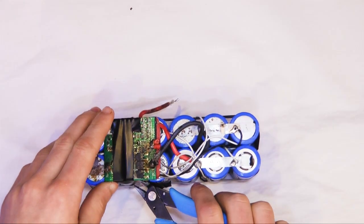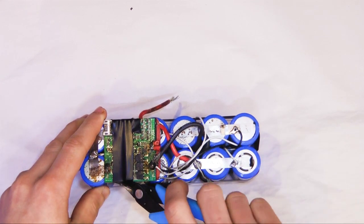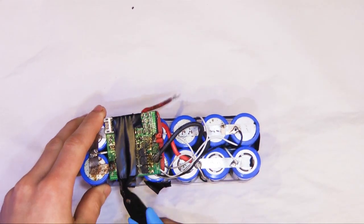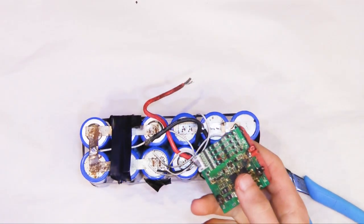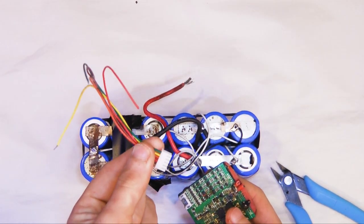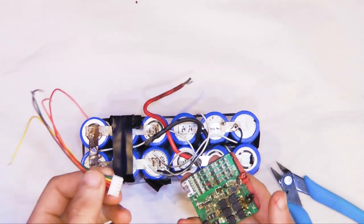So, let's start by taking off all the old components. I'm pretty sure this balance board is broken, and I do not have another. So, we're going to be using just balanced leads so we can connect it to an actual balanced charger.